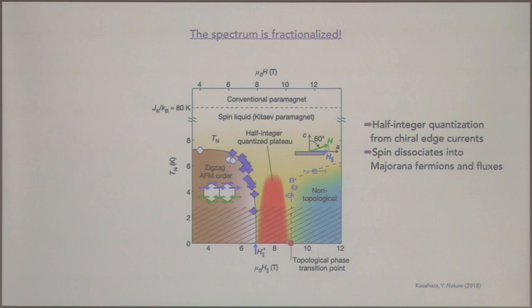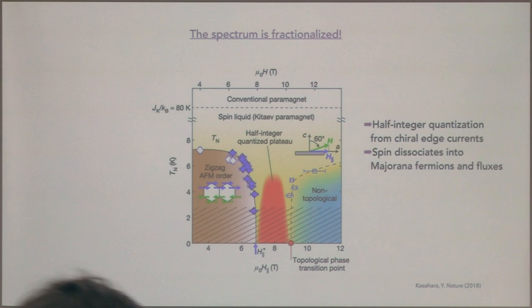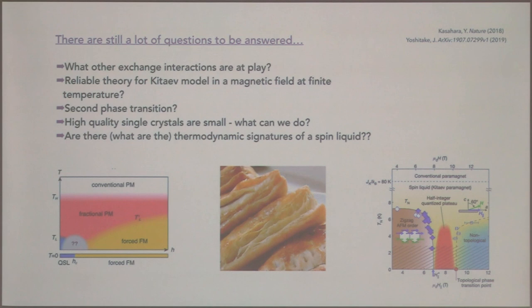More recently it's become even more interesting because of thermal Hall measurements. In these measurements, what they find is a small region in magnetic field between about seven and nine Tesla where the thermal Hall signal is quantized. We should clearly spend more time looking into these materials, but there are obviously a number of questions at this point that we should be asking ourselves.